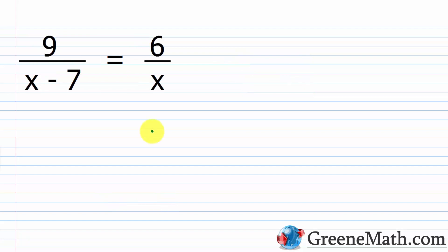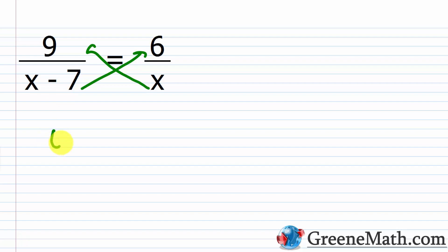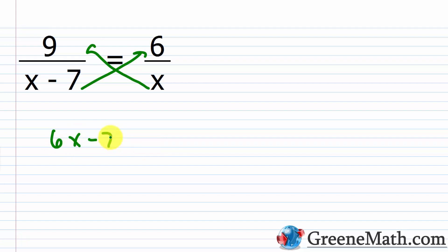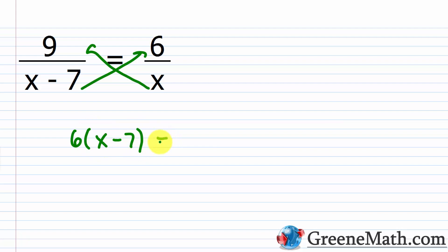Let's look at 9/(x-7) = 6/x. We cross-multiply, but we have to be careful: 6 is multiplying the quantity (x-7), so we get 6 times (x-7) — a common mistake is to write 6x - 7, but that's wrong. The 6 must multiply both terms. So 6(x-7) = 9x.